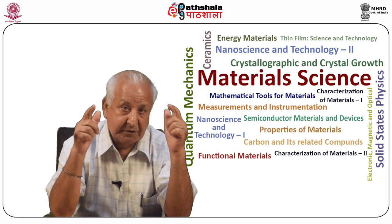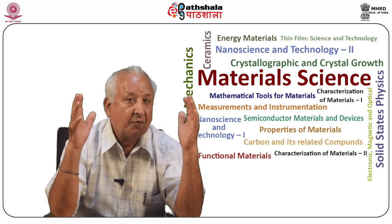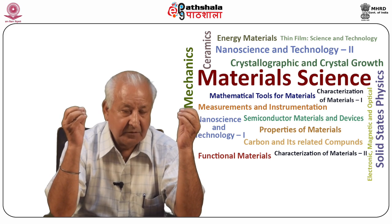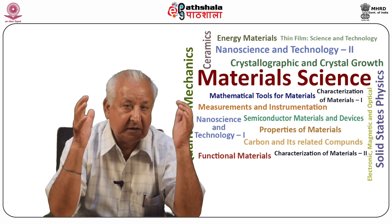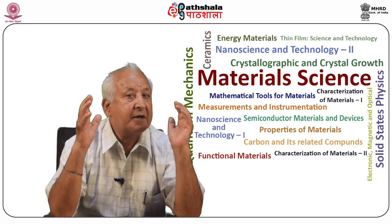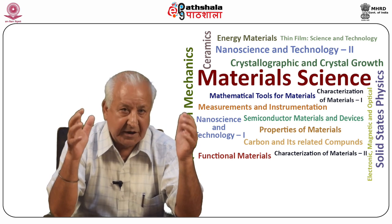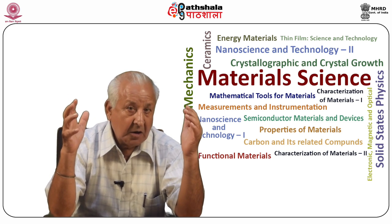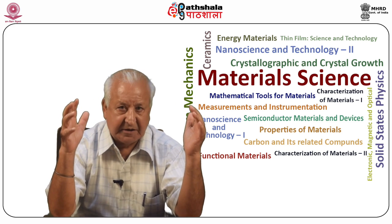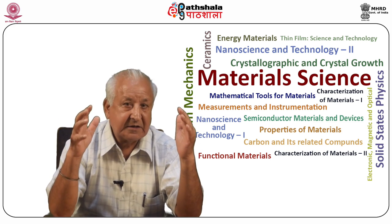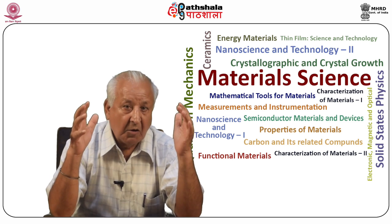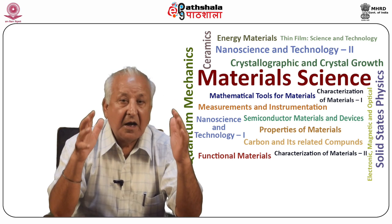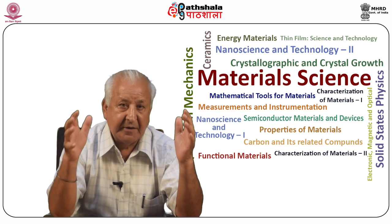In the previous modules, various schemes for labeling the crystallographic point groups were explained. However, Hermann-Mauguin is considered as modern and treated as international notation. The basic 32 crystallographic point groups corresponding to each crystal system have been thoroughly discussed. The concept of space groups and the difference between symmorphic and asymmorphic space groups have also been discussed.